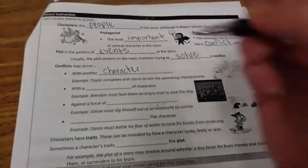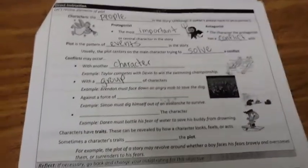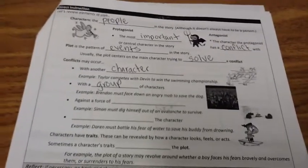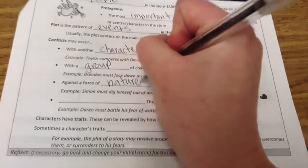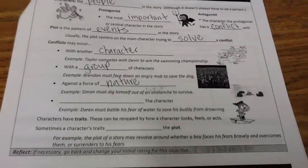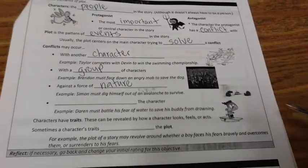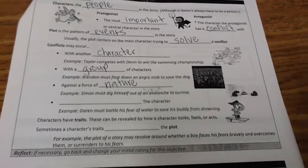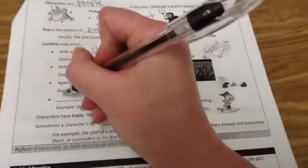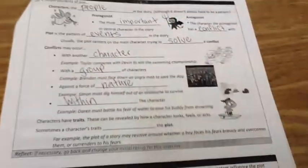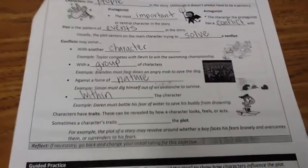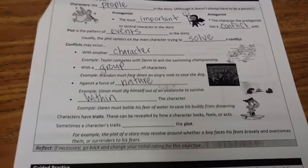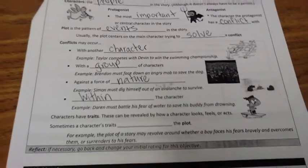Conflicts can also occur with a group of characters — for example, Brandon must face down an angry mob to save the dog, so Brandon is against a group of characters. Conflicts can also occur against a force of nature — for example, Simon must dig himself out of an avalanche to survive, so Simon is against the avalanche. And lastly, conflicts may occur within a character — that's a conflict a character has with himself. For example, Darren must battle his fear of water to save his buddy from drowning; Darren is in conflict with himself — it's his fear of water.